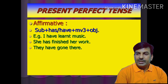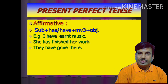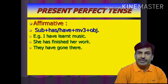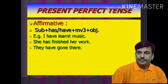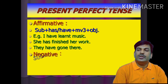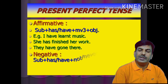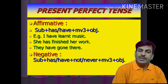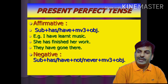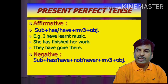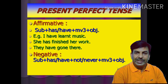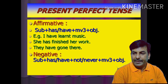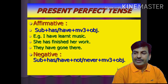Another example: 'They have gone there' — they is a plural subject, so have is used, gone is the past participle, and there is the object. Now let us know the rules for negative sentences. In a negative sentence: subject, then has or have according to the number of the subject, then not or never — these are known as adverbs of negation — then the past participle, and finally the object.